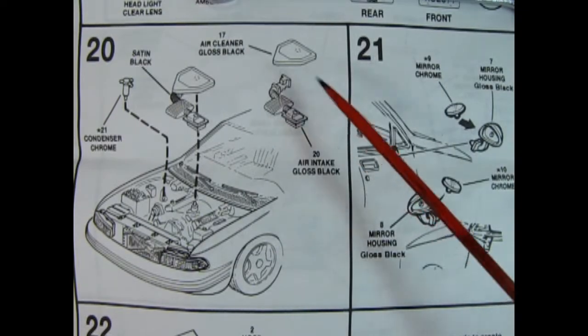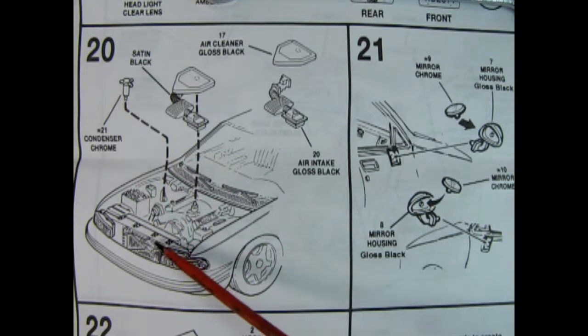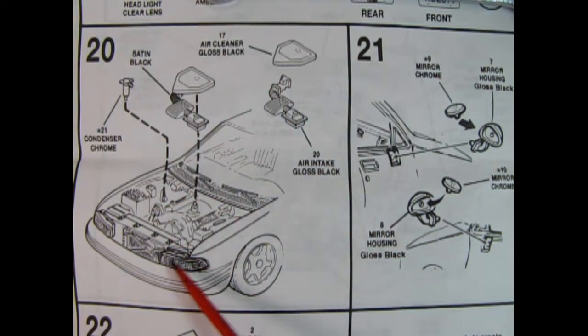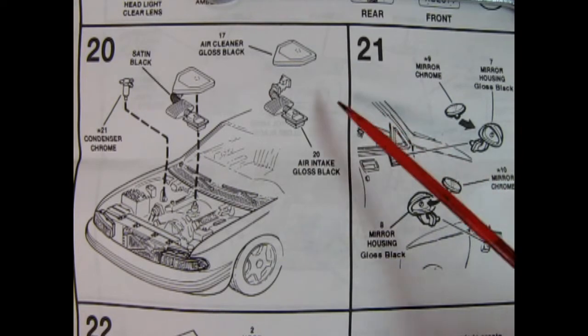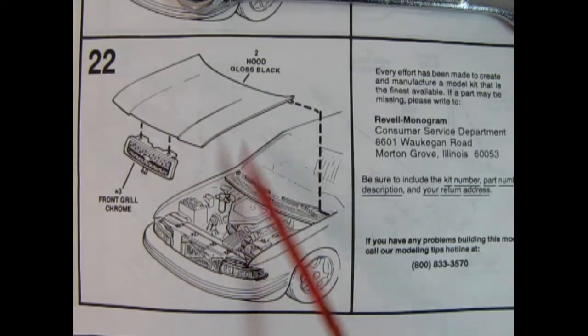Panel 20 shows the air cleaner going together. It's a two-piece unit. And then here we've got our condenser for our air conditioner. So all that will hook in under the engine bay on top of that engine block. And then here we've got our chrome mirrors and the mirror housings all going in place on left and right. And in panel 22, we have the front grille being glued on the underneath of the hood. And then that drops in position here. So I hope you enjoyed the instructions. And I will be taking a look at the decals in a little while.